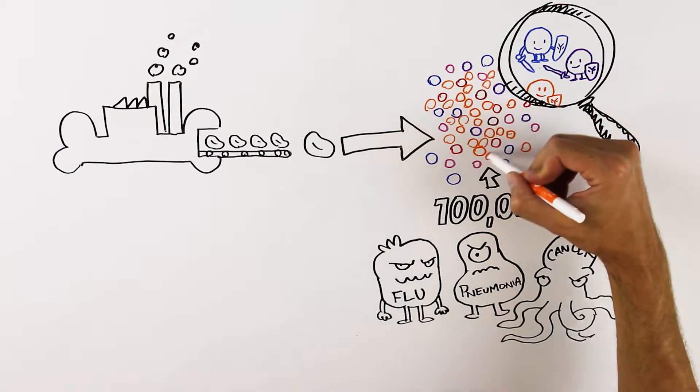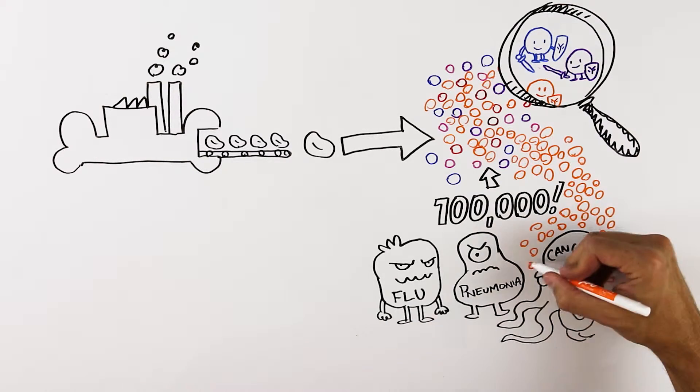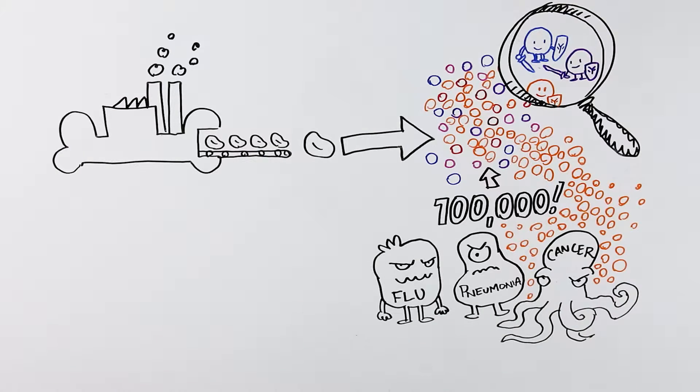When someone has multiple myeloma, one of these antibodies overgrows, doesn't die when it should, and crowds out the normal antibodies, making your overall immune system weaker, not stronger.